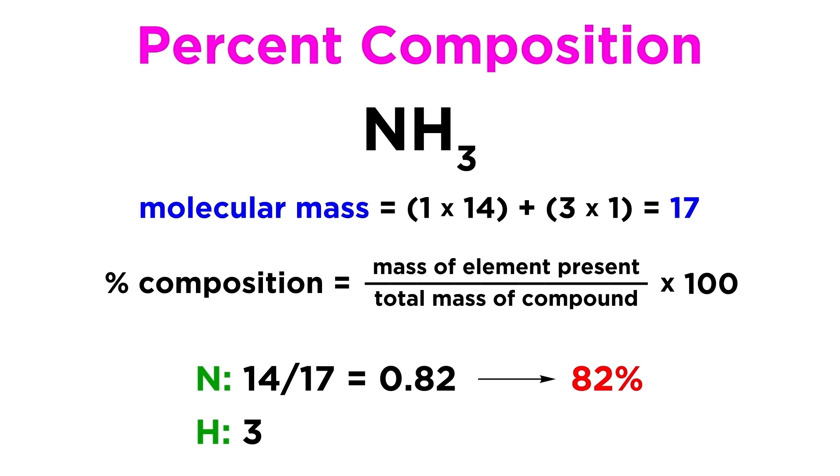The three hydrogen atoms have a total mass of 3, and 3 over 17 gives us 0.18. Multiplying by 100, that gives us 18%, so hydrogen represents 18% of the mass of the molecule. And 82% plus 18% does add up to 100%, so these calculations do make sense. So this is the percent composition of ammonia.